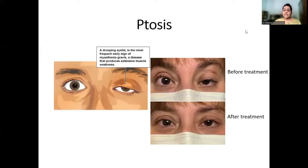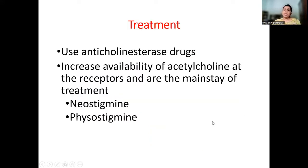You can see in the image that before treatment the patient has drooping of the eyelid, visible on the right side. After treatment, he has improved. Treatment uses anti-acetylcholinesterase drugs such as neostigmine, which increase the availability of acetylcholine at the receptors and are the mainstay of treatment.